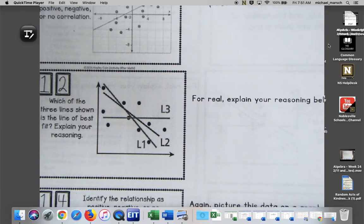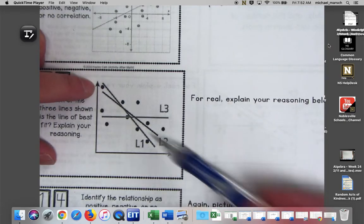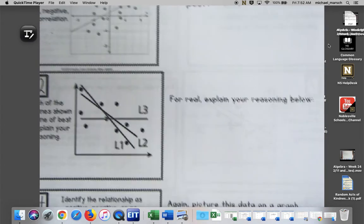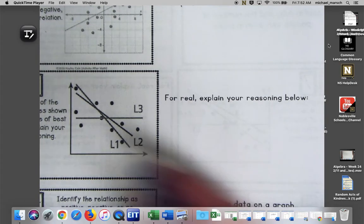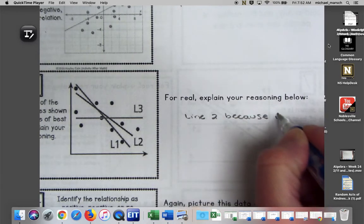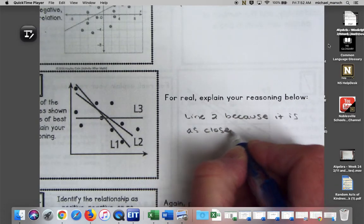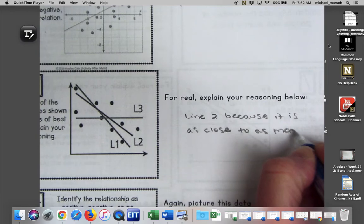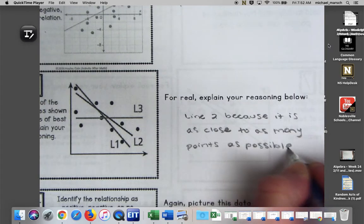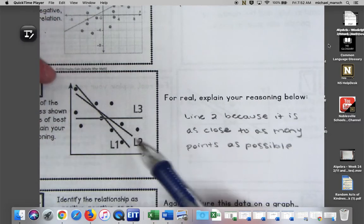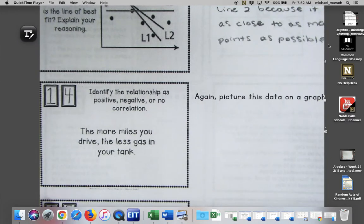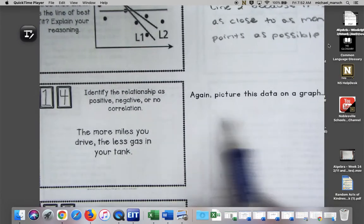Number 12, which of the three lines shown is the best line of fit? Explain your reasoning. You should have said line two, because it's as close to as many as possible. Line three is a hard no. Hopefully you said line two because it is as close to as many points as possible, even line one is kind of wonky, but line two definitely is going with as many points as possible.